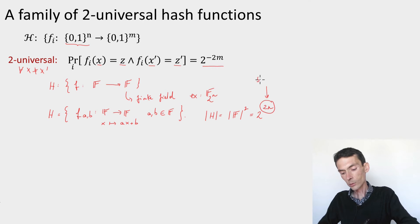This is relevant because that's the size of the seed that's required to choose a function at random. So we would get a seed length 2n, which is not too bad—it's linear in the length of the input.